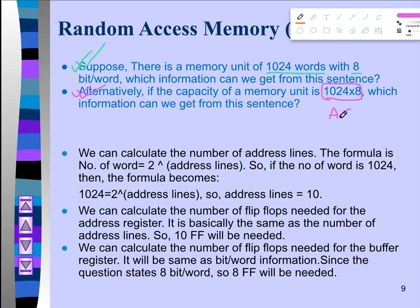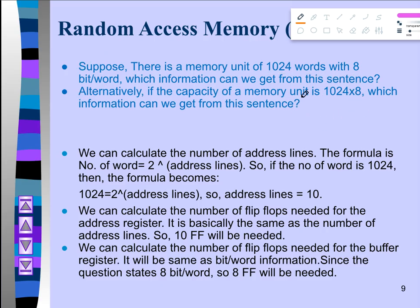Whenever you see a format like A × B in the context of a memory unit — for example 1024 × 8 — you should automatically assume that the left part of the multiplication sign indicates the number of words, and the right part indicates bits per word. Once we understand this, we can derive other information from these numbers.